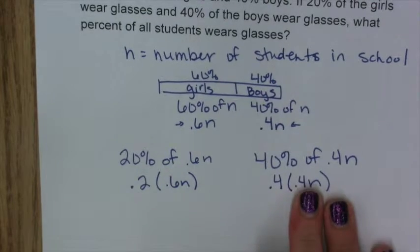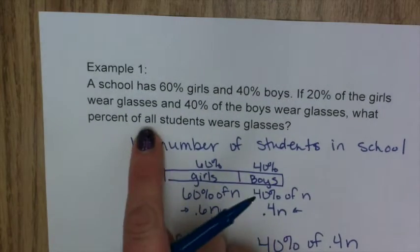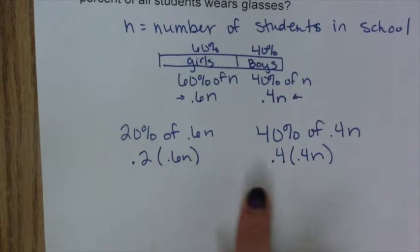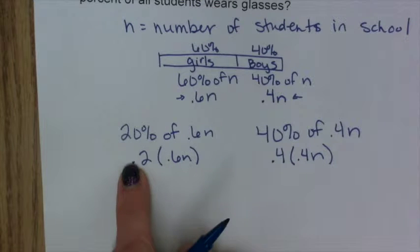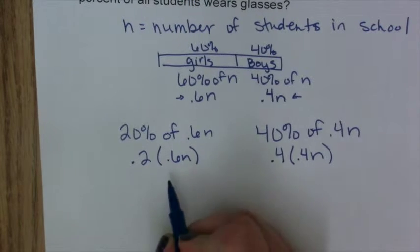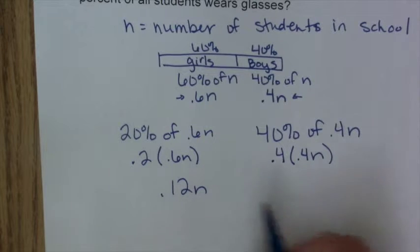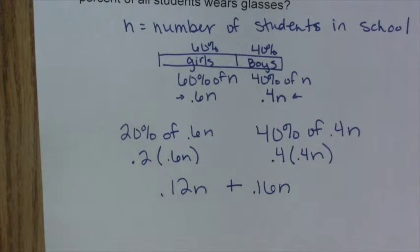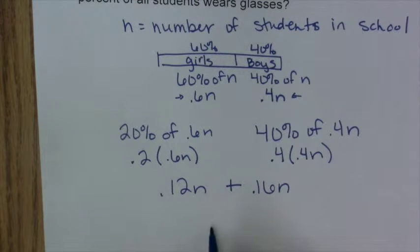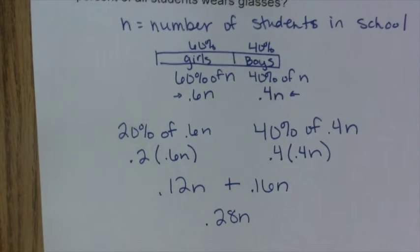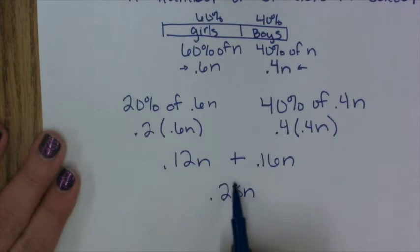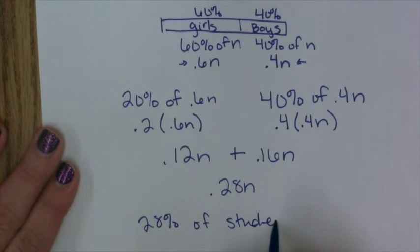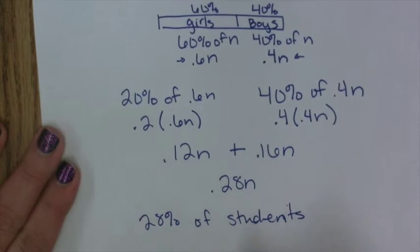Since we want to know what percent of all students wear glasses, we need to combine the girls and boys together. 0.2 times 0.6N equals 0.12N, plus 0.4 times 0.4N equals 0.16N. Adding those together gives us 0.28N, or 28% of students wear glasses.